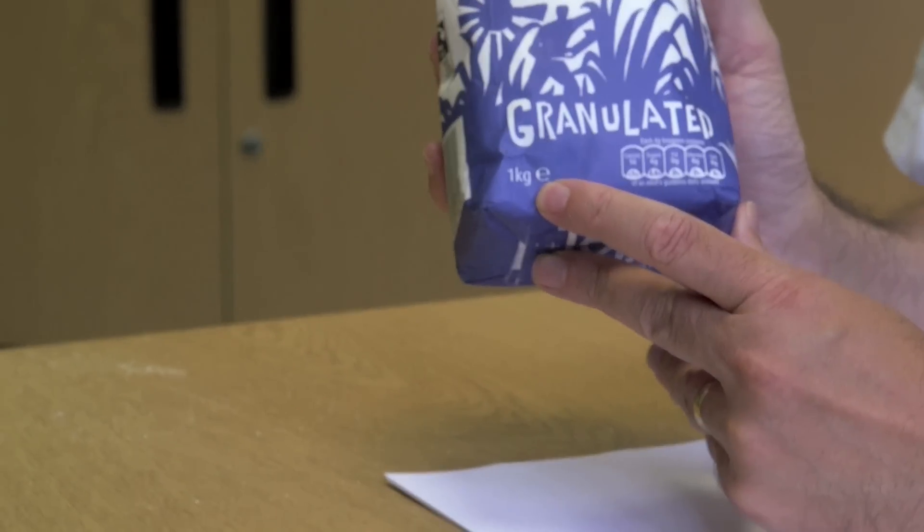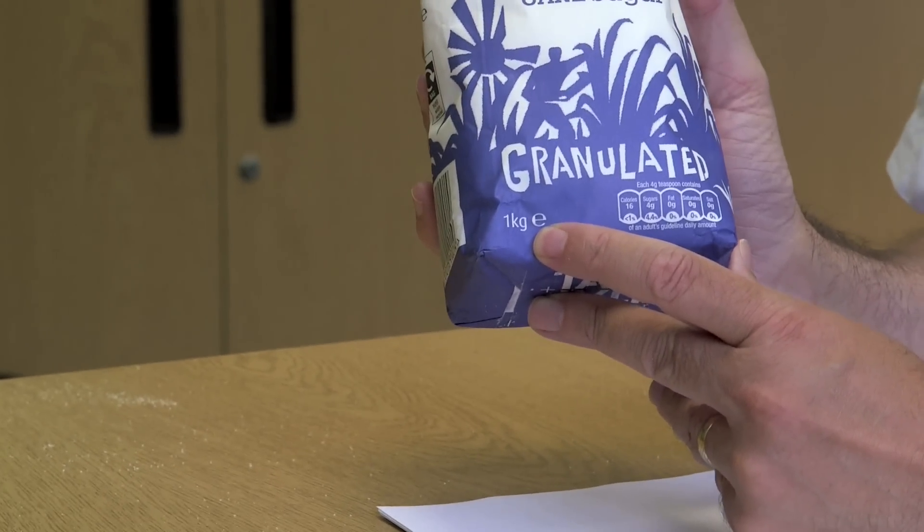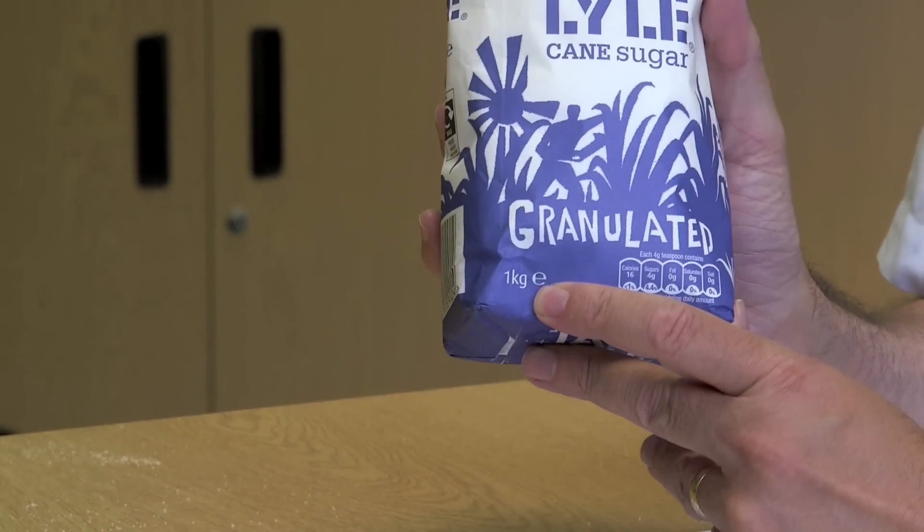...asked what the little 'e' next to one kilogram means, which I didn't actually know, so I went and looked it up, and it turns out it just means that the mass is estimated.